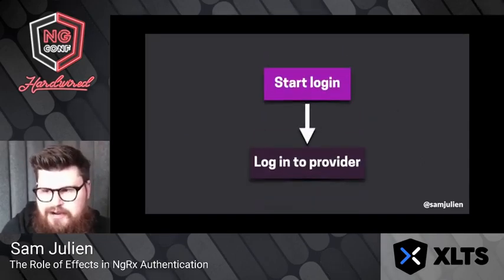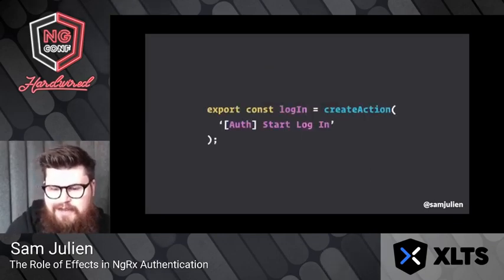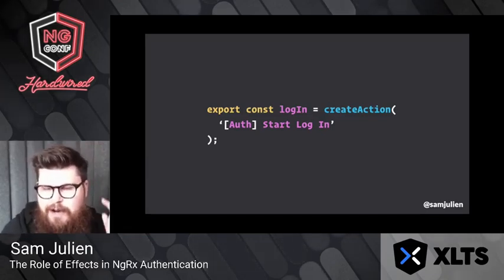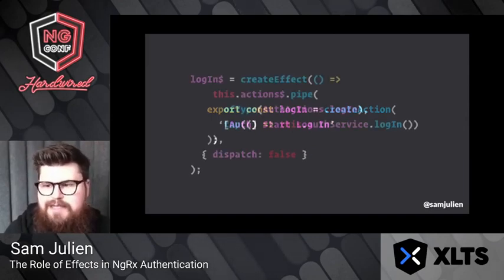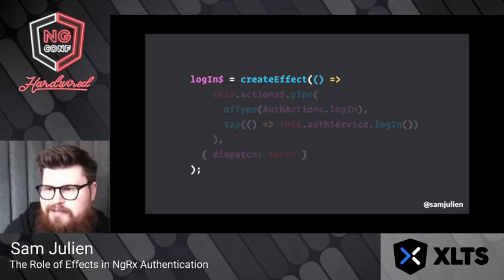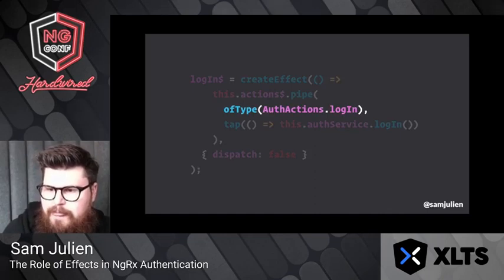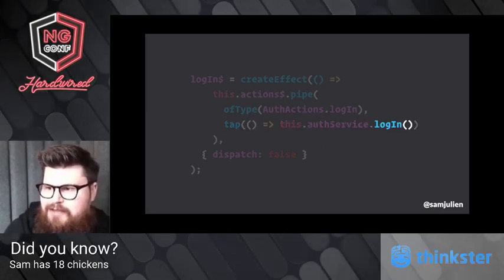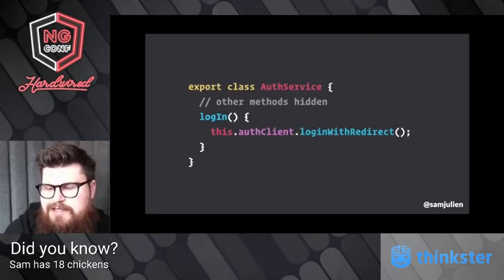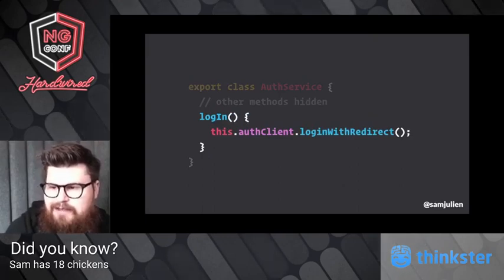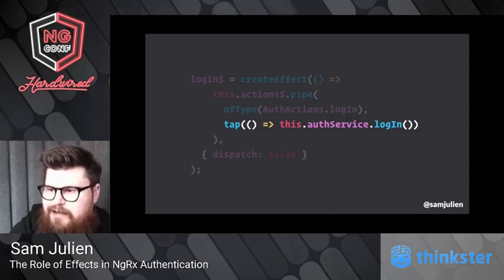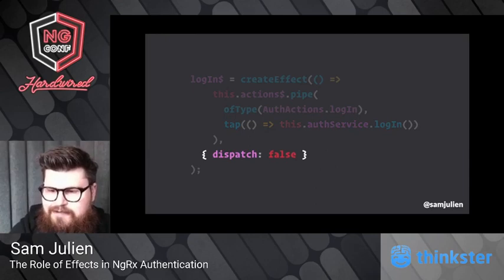Let's zoom in on starting the login process. We create a login action to kick off the process, and then we create a login effect that listens for that login action. We use the tap operator — used for side effects in RxJS — and call the auth service's login function, which is just a pass-through wrapping the auth client's login function from whatever SDK you're using. After we call login, we're going to be sent off somewhere else, so we're not dispatching a new action. We need to pass the dispatch option set to false.